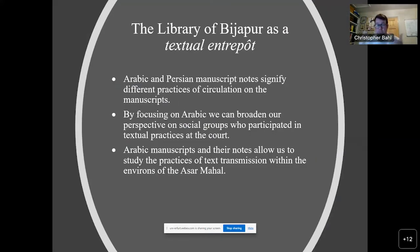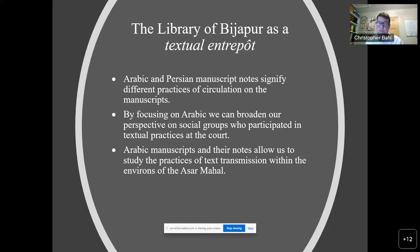The three argumentative strands are: first, Arabic and Persian signify different practices of circulation; second, by looking especially at Arabic notes and texts we can broaden our perspective on social groups — manuscript notes are crucial to understand arabophone communities since we don't have the same prosopographical source base for Arabic as for Persian; and third, the Asar Mahal becomes this textual entrepôt in the 17th century.